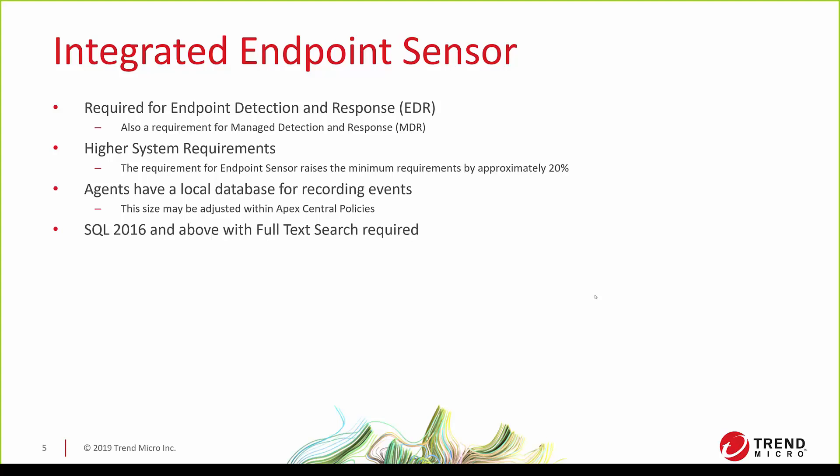The agents also have a local database in which they record events, and the size of that database is determined by the policy assigned to the agent. This can be set to five gigabytes if you want a very large amount of data recorded for any particular event, or to house older events so you can do historical searches beyond metadata. That will adjust the amount of disk space needed by the agent. The other part of endpoint sensor is that you do need full SQL Server 2016 with full text search enabled, 2016 or above. These are the only real considerations for deployment of endpoint sensor: can your systems handle the system requirements, and do you want EDR? Other than that, it's not a difficult product to manage — you don't have many options with it. It's just doing the endpoint sensor things and allowing you to functionally perform detection and response.